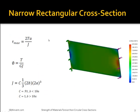The first thing I'm going to talk about are narrow rectangular cross-sections. To calculate the shear stress of a narrow rectangular cross-section, you would use this equation here, where a represents half the width. To calculate the angle of twist over the length of the beam, you would use this equation here. And to calculate the polar moment of inertia, you would use this equation, where b represents half the height. Note that c equals 0.91 if b is less than 10 times a, and c equals 1 if b is greater than 10 times a.